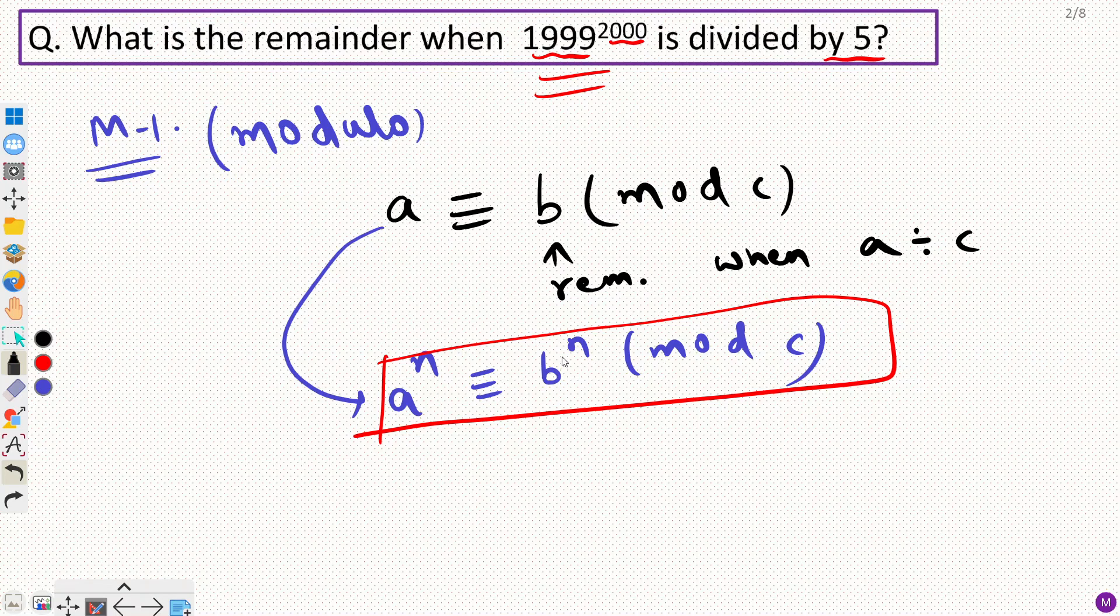And this is the property that we use while solving such questions where we have large powers. Now think over this. What would be my ideal B here if I want to raise it to a big power. So let's say we have a power as big as 2000 which we want here right. So what should be my B here that we do not need to calculate this.